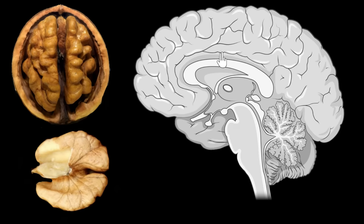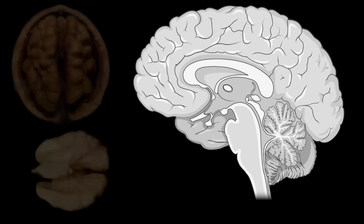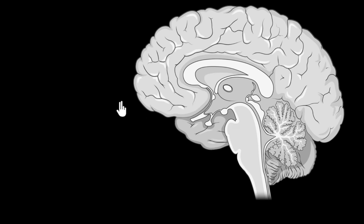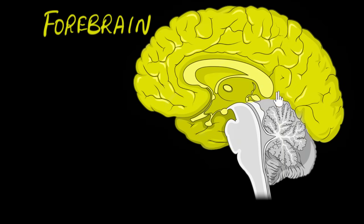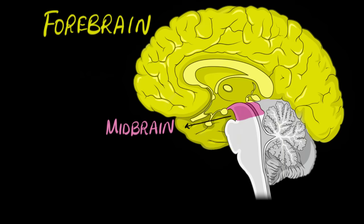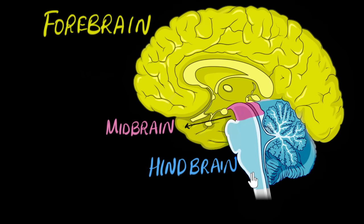It's the inner side of one of the hemispheres. Looking at the different parts, we can broadly divide our brain into three parts: the forebrain, which is this big yellow section; the midbrain, which is this tiny pink section; and the hindbrain, or the lower brain, which is this blue section.